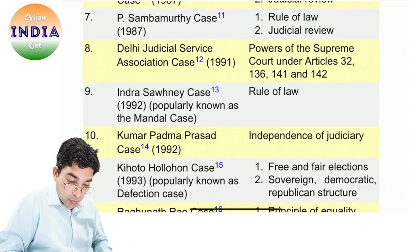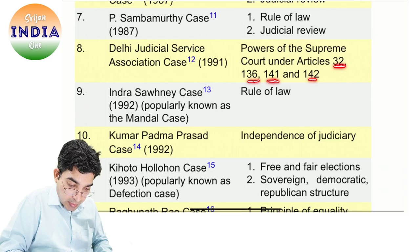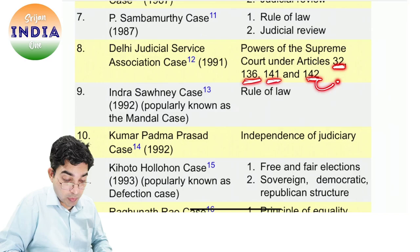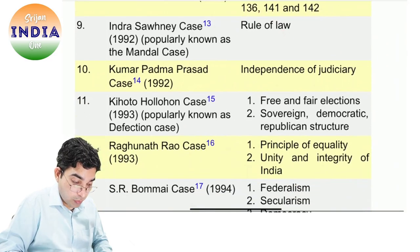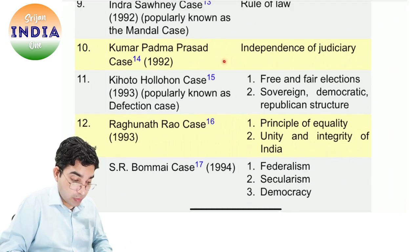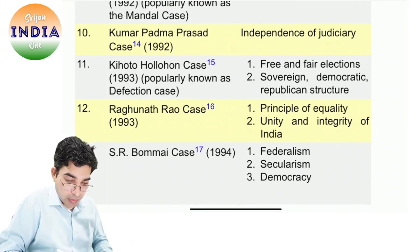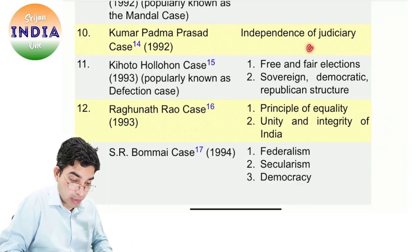Rule of law, judicial review. Power of the Supreme Court under Articles 32, 136, 141, and 142 — in charon article mein kya likha hai? Article 32 mein kya likha hai? Article 142 kya hai? Phir Indira Sawhney case hai — rule of law Mandal case mein bataya. Phir Kumar Padma Prasad case mein independence of judiciary bataya. Judiciary ka jo kharcha hai — salary wagera — wo charged on Consolidated Fund of India hota hai. 'Charged on Consolidated Fund of India' ka matlab kya hota hai?